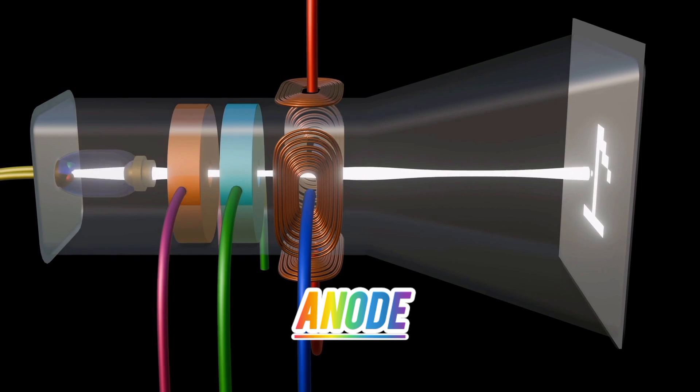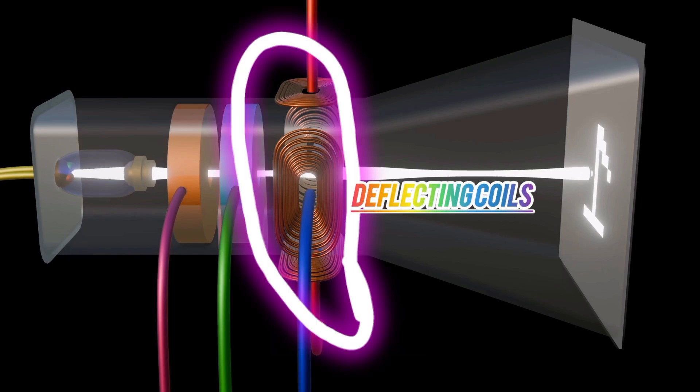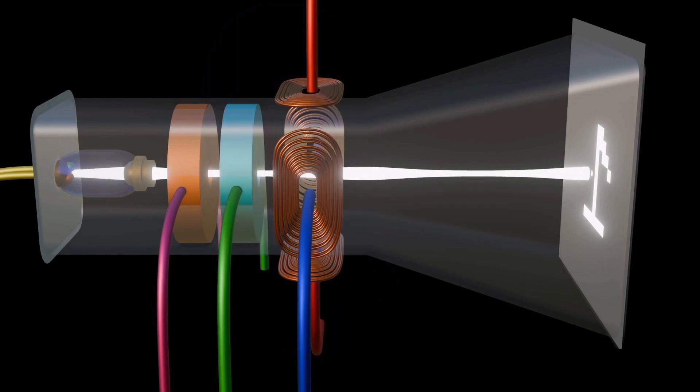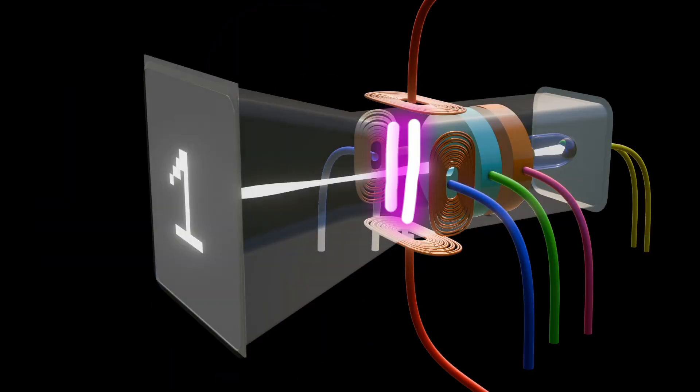Then the two sets of deflecting coils, the horizontal coil and the vertical coil. Here, magnetic fields are produced by the deflecting coils.